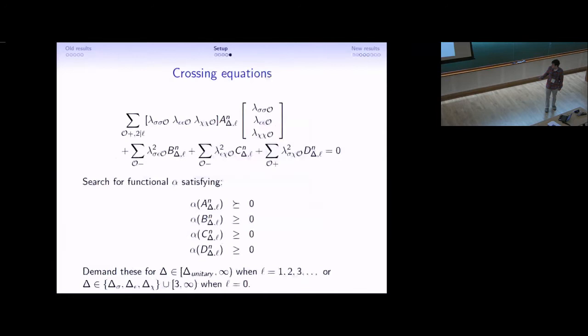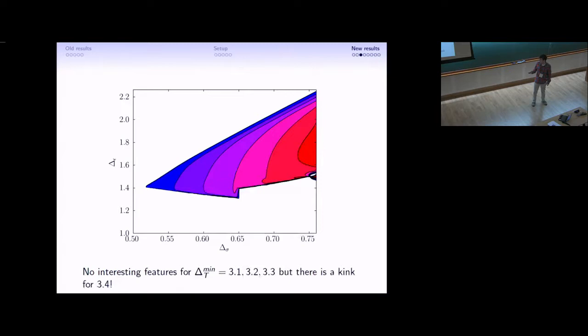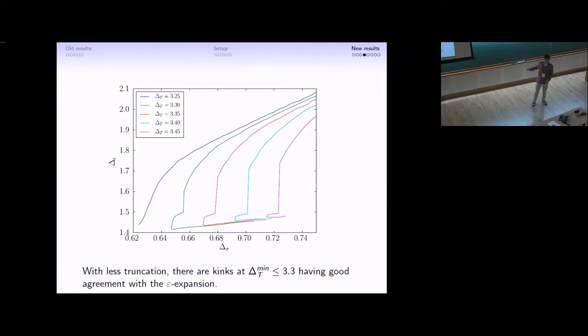There's one more check that we can perform. Going back to the crossing equations, we can see that there are only two types of operators, the Z2 even kind and the Z2 odd kind. And, yet, they can show up in more than one OPE. The sigma chi OPE and the both symmetric OPEs should contain the same types of operators. But, a priori, they don't have to be the same as far as these crossing equations are concerned. Therefore, it's helpful if we can look at the allowed region where valid CFTs can exist and actually extract a spectrum that satisfies the crossing symmetry condition.